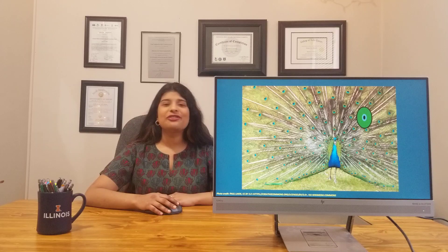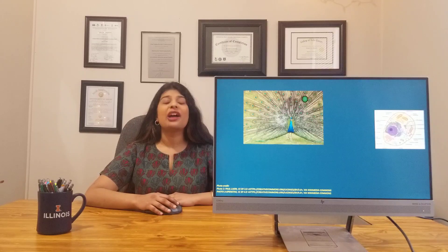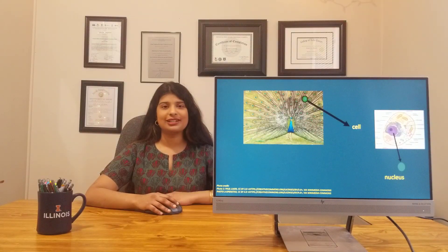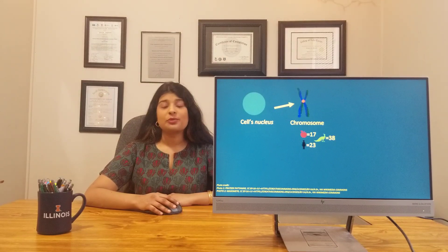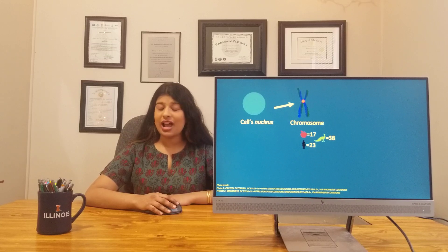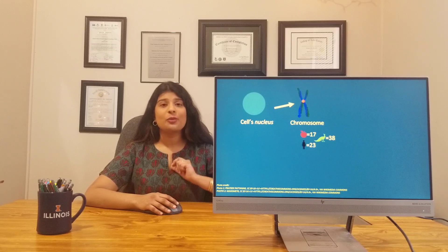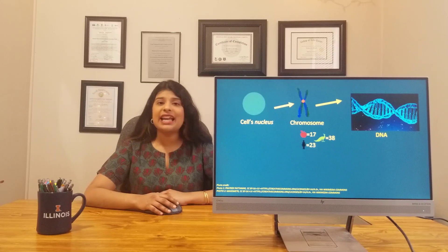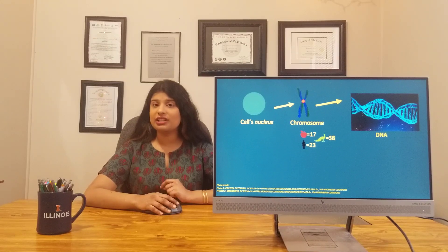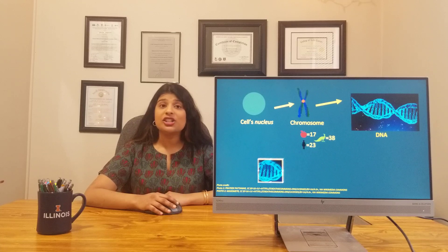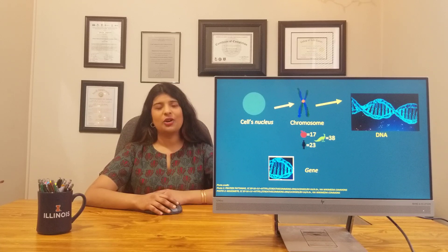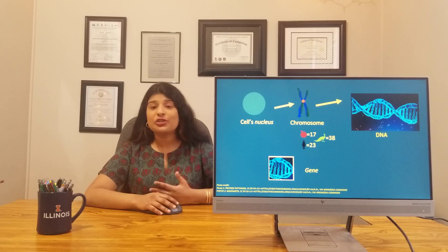We all know that cells are the basic building blocks of life, and within the cell we have other components like the nucleus. In a nucleus one can find what is known as a chromosome. Humans have 23 pairs of chromosomes, apples have 17 pairs of chromosomes, and our peacock here has 38 pairs of chromosomes. Within the chromosomes one can find DNA, or deoxyribonucleic acid, and in the DNA is where we find our genes.